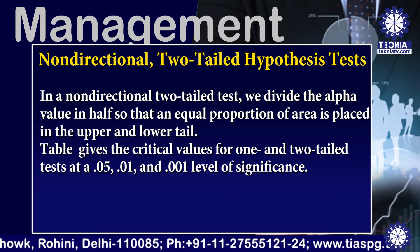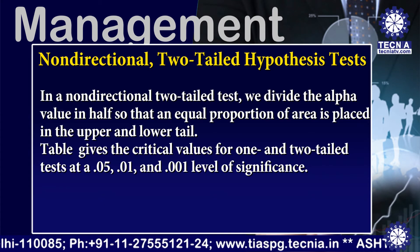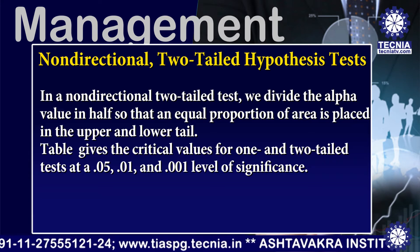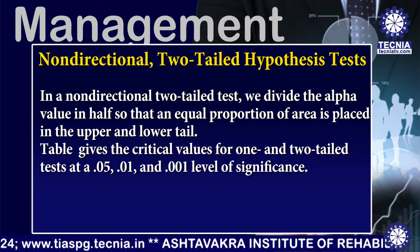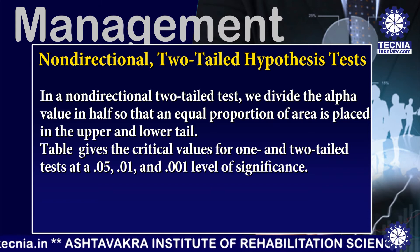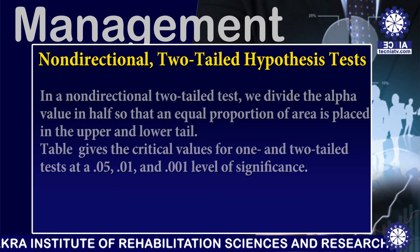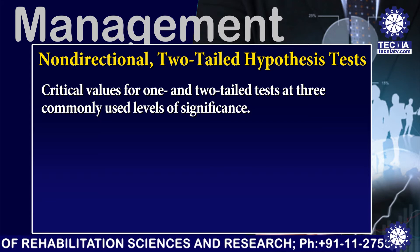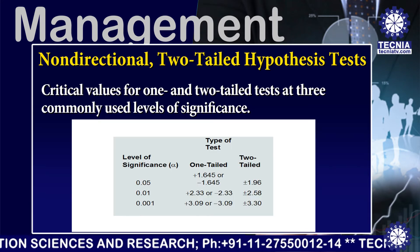In a non-directional two-tailed test, we divide the alpha value in half so that an equal proportion of area is placed in the upper and lower tail. A table gives the critical values for one and two-tailed tests at 0.05, 0.01, and 0.001 levels of significance. Critical values for one and two-tailed tests at these three commonly used levels of significance are represented in the table.